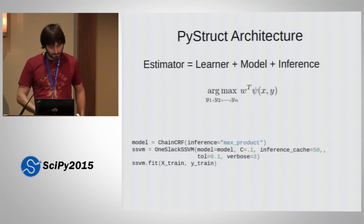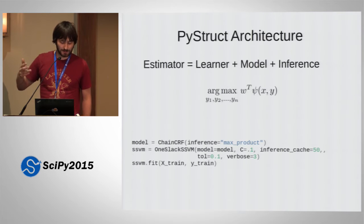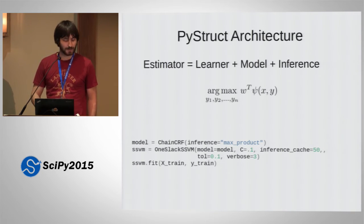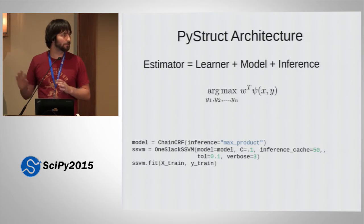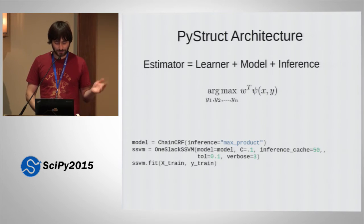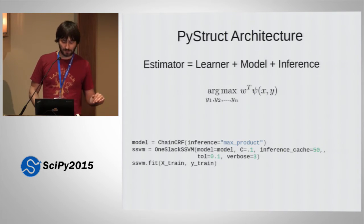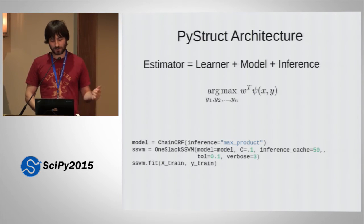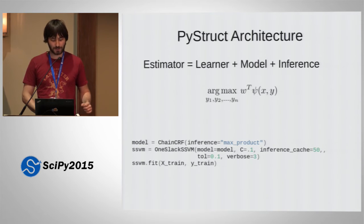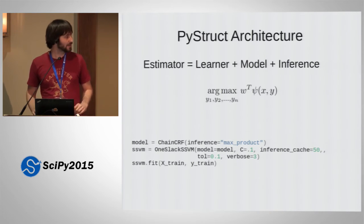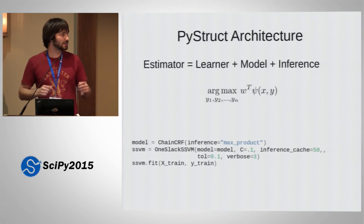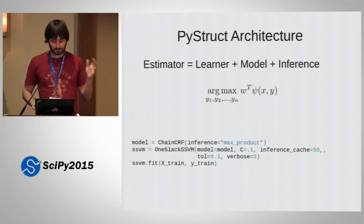This is the way this looks in code. There are classes in PyStruct that give you all kinds of different models. For example, if I have a chain model and want to do sequence prediction, I take a chain CRF. Then for inference I can just pass a string — there are built-in options like max product, which you might know as Viterbi, or belief propagation. And then you have the learner, which here is the one-slack structured SVM. These are the three things you combine to get a model. You tell the learner which model to use, set some parameters, then call fit with training data and training labels. Here, y-train is usually a list of tuples, because each data point has multiple outputs.